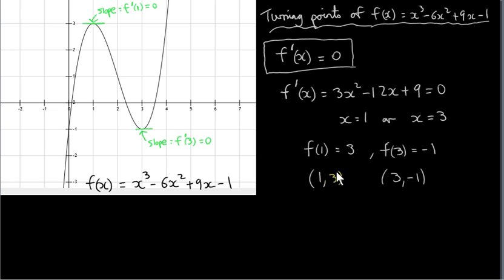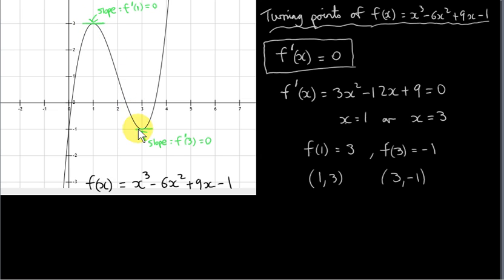We can get the coordinates of the two turning points. If we know the x values, we can get the y values by evaluating the function at x equals 1 and at x equals 3. Plugging 1 into the function gives f(1) = 3, so we have the point (1, 3). Plugging 3 in gives the point (3, -1). Knowing these two points, we can draw a rough sketch of the curve. Since the point (1, 3) is higher than (3, -1), we see that (1, 3) must be a local maximum and (3, -1) is a local minimum.